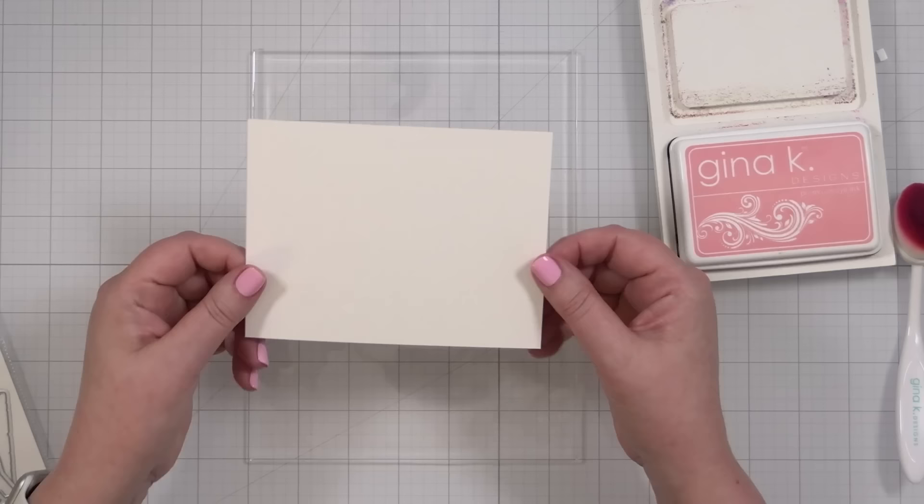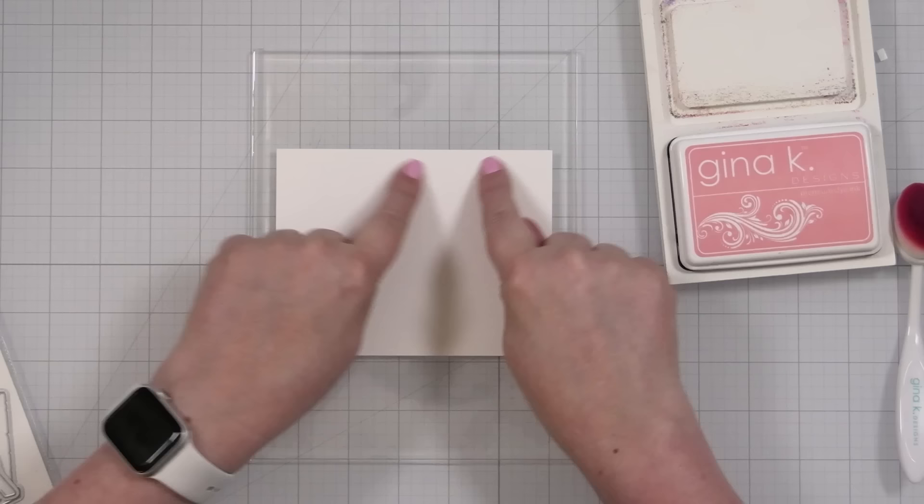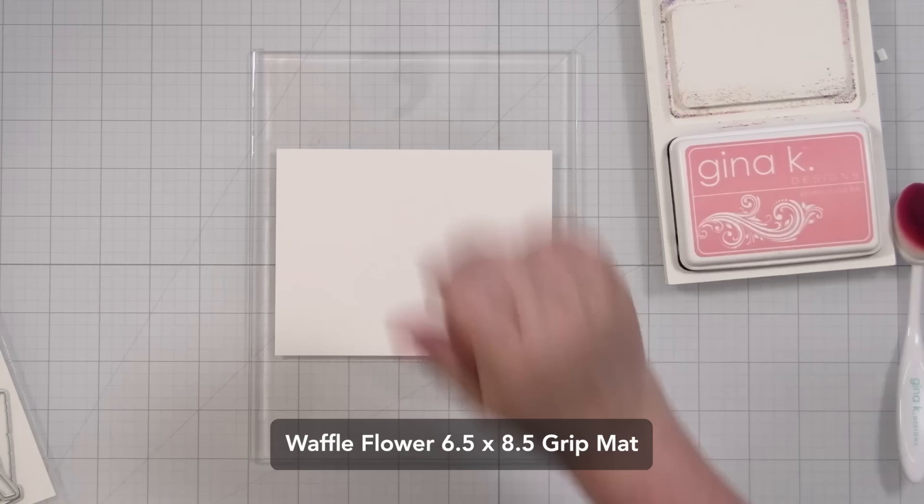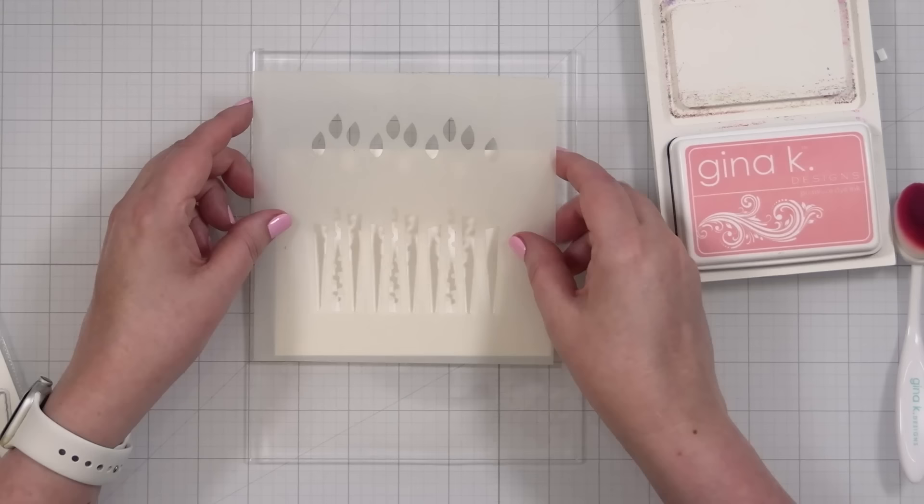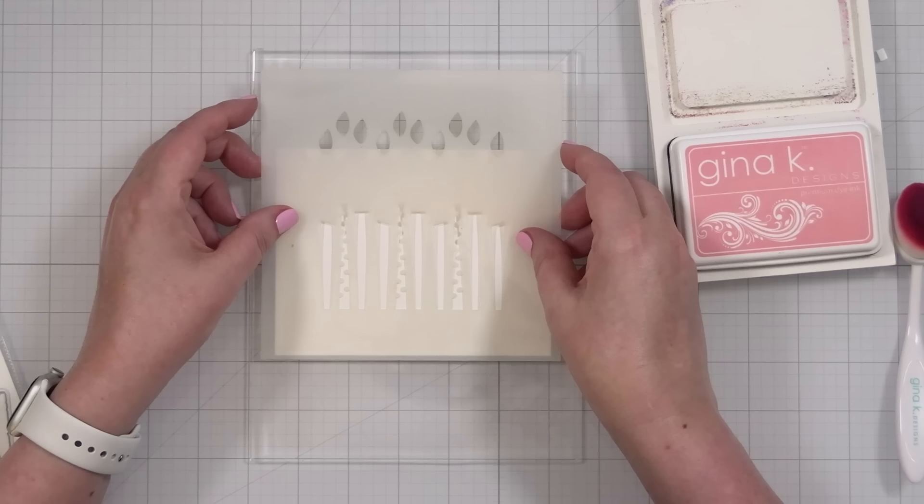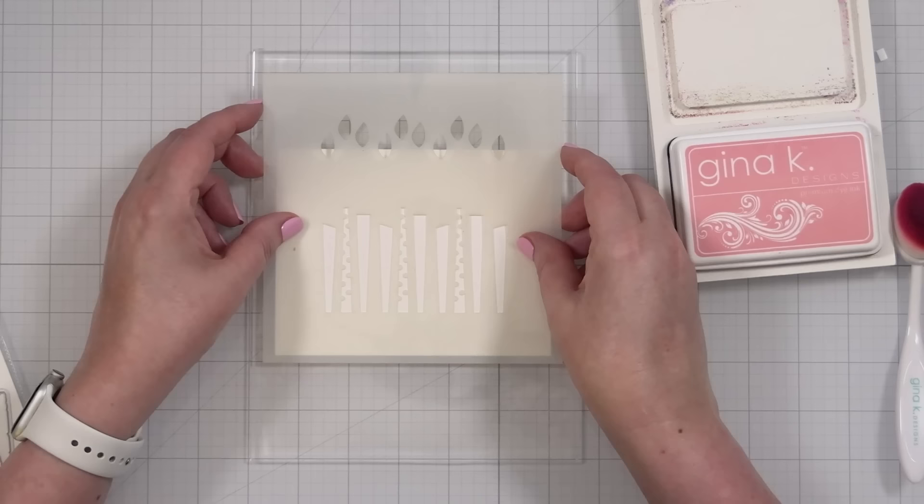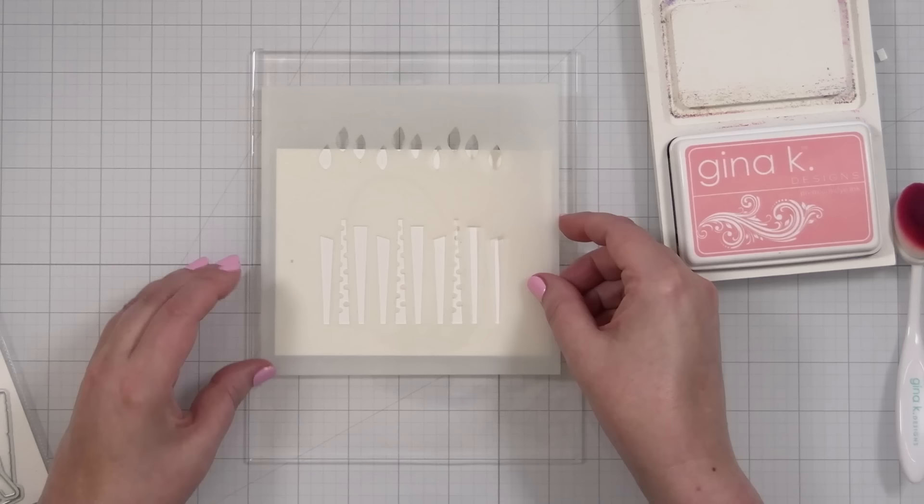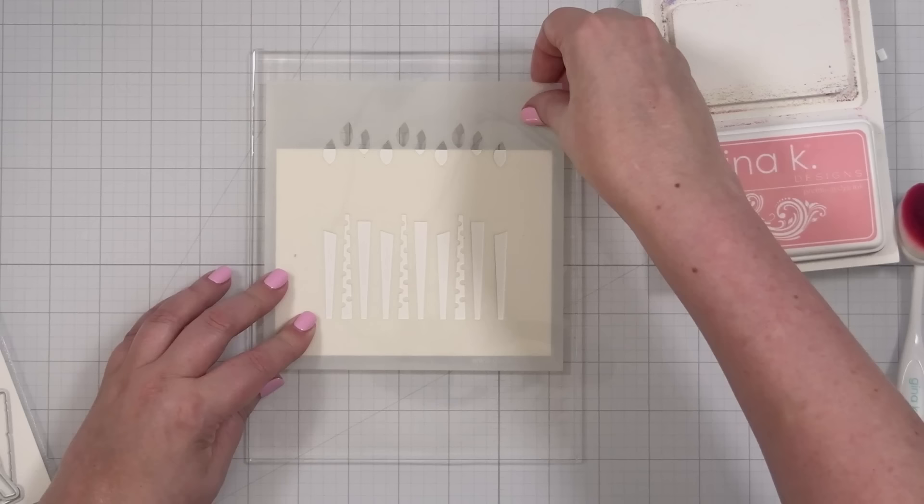I've got a panel of Gina's heavy base weight cardstock, and I'm going to pop it right here in the center of this little grip mat. I have a grip mat that is six and a half inches wide by eight and a half tall, and I'm going to take layer one. So I'm going to start with less detail. I'm going to pop this basically right about here in the center. Get that as straight as I can.